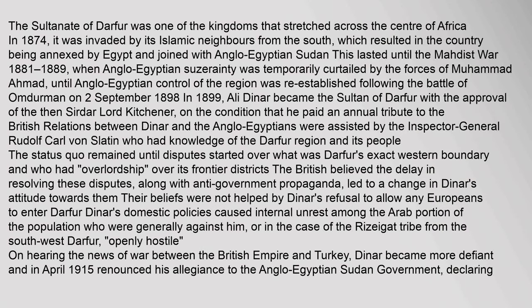The Sultanate of Darfur was one of the kingdoms that stretched across the centre of Africa. In 1874, it was invaded by its Islamic neighbours from the south, which resulted in the country being annexed by Egypt and joined with Anglo-Egyptian Sudan. This lasted until the Mahdist War 1881–1889, when Anglo-Egyptian suzerainty was temporarily curtailed by the forces of Muhammad Ahmad, until Anglo-Egyptian control of the region was re-established following the Battle of Omdurman on 2 September 1898. In 1899, Ali Dinar became the Sultan of Darfur with the approval of the then-Sirdar Lord Kitchener, on the condition that he paid an annual tribute to the British.